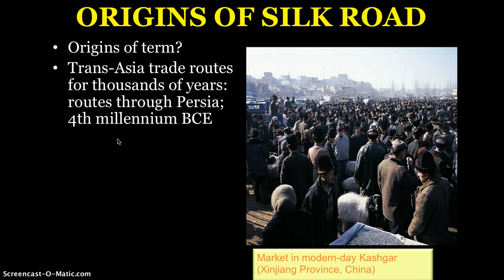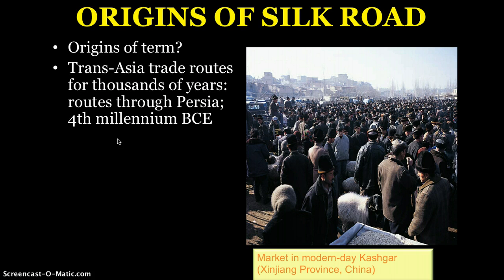These trade routes linked Asia from China — whose capital at the time was Xi'an — all the way through the Middle East, through regions we'd today consider post-Soviet, including major urban centers like Kazakhstan and Uzbekistan, and ultimately linking East Asia and China to the modern-day Middle East, Syria, Lebanon, and then on via the Mediterranean to Europe. This originates with the early foundations of Persian civilization around the fourth millennium BCE.